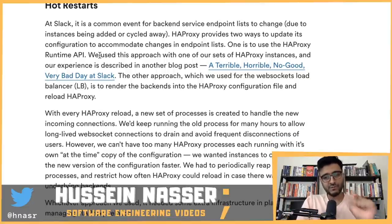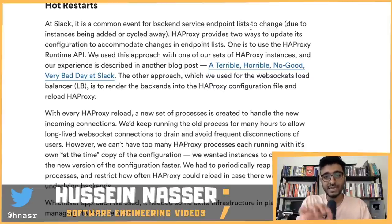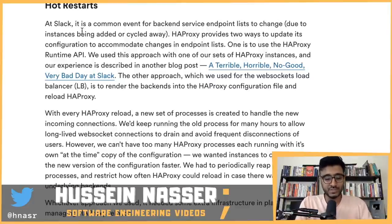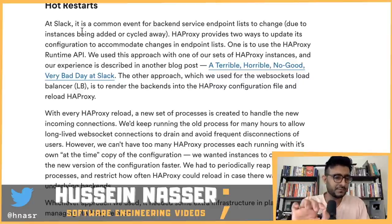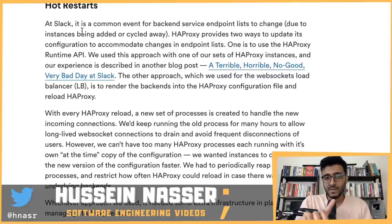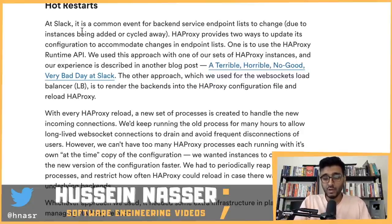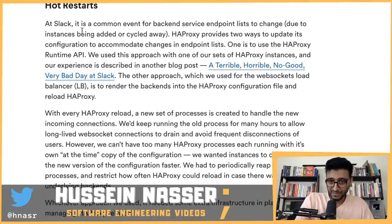It's a common event for backend service endpoints to change due to instances being added or cycled — old services killed, new ones added, IP addresses changing all the time. So you need to update the proxy configuration very often. HAProxy provides two ways to update its configuration to accommodate changes in endpoints. I'll give Envoy a point here in a minute. The first way is through the runtime API — I made a whole video about using the HAProxy runtime API to add and remove backends on the fly.